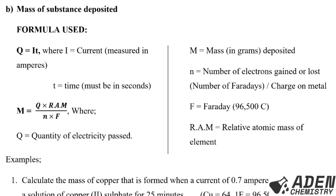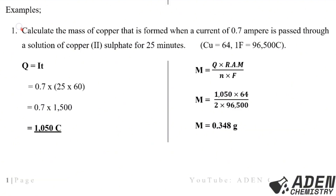When calculating mass deposited, the formula is: M = (Q × RAM) / (N × F), where Q is quantity of electricity (obtained from Q = IT, with T in seconds), M is mass in grams deposited, N is number of Faradays, F is 96,500 Coulombs, and RAM is the relative atomic mass of the element.